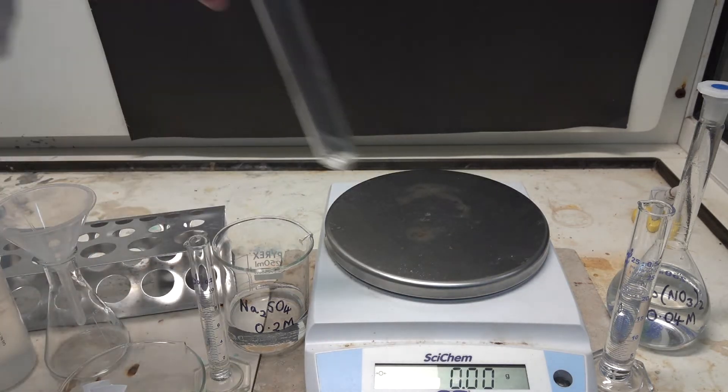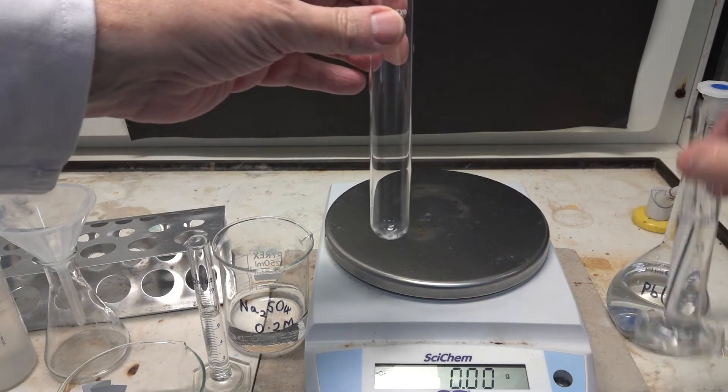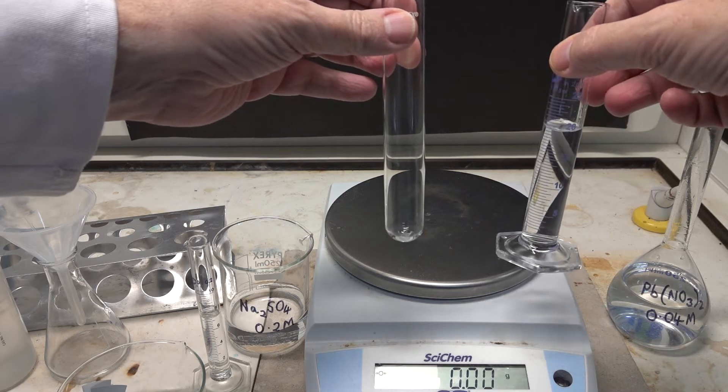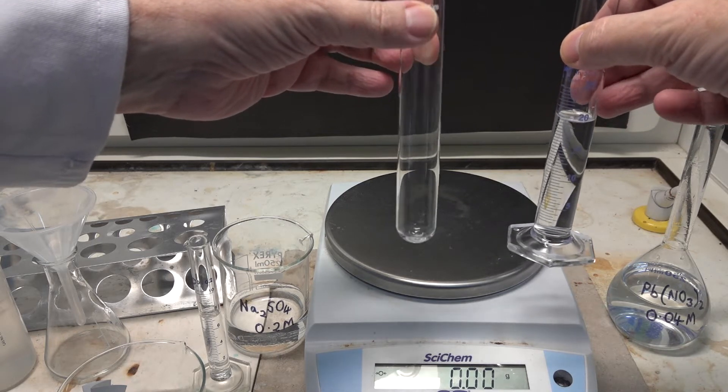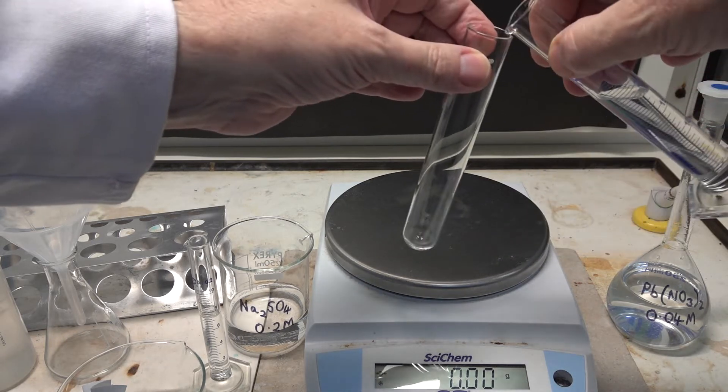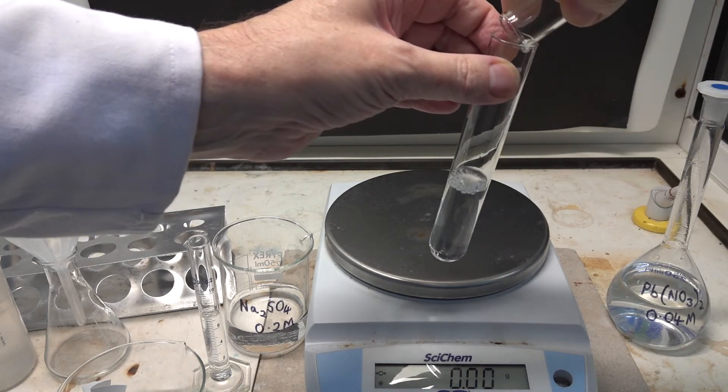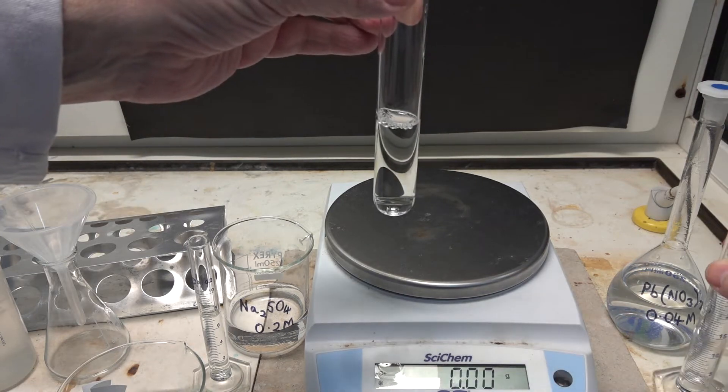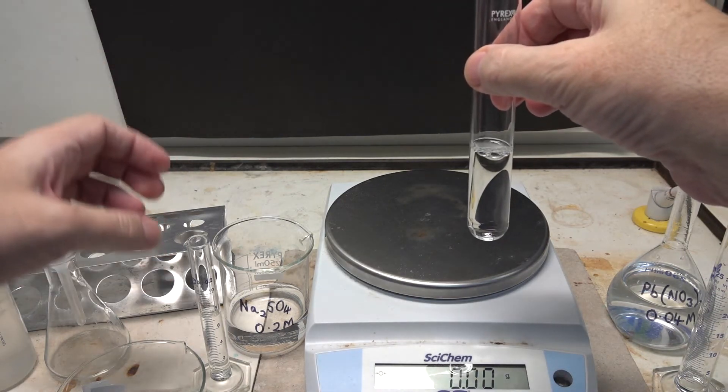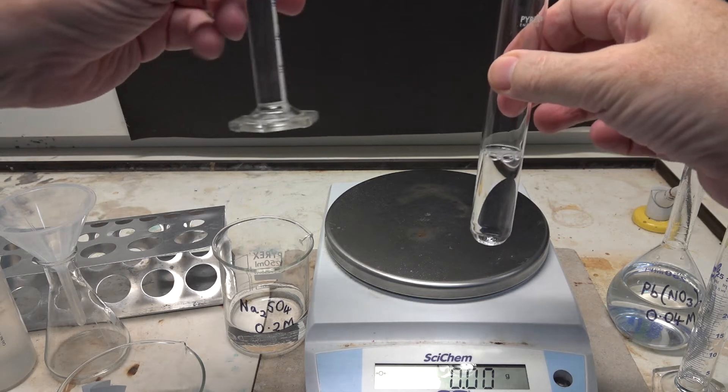We're going to carry out the reaction in a boiling tube here, and we take 20 centimeters cubed of 0.04 molar lead 2 nitrate. Lead compounds are of course toxic, and so we want to be careful of that.